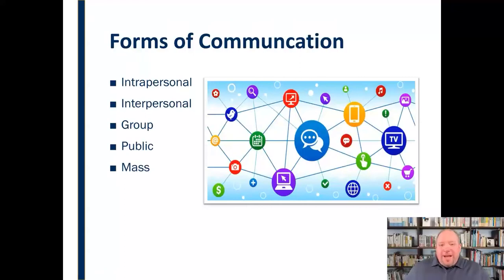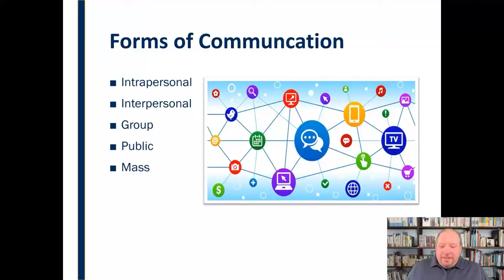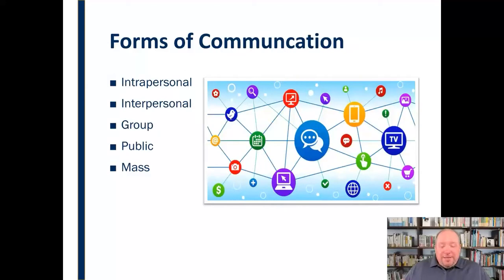Finally, we get to mass communication — communicating via television, radio, and even forms of the internet. Anytime we're trying to reach a mass audience, as big an audience as possible, that's mass communication. It follows the same general elements of the communication process as the other areas, but there are some key differences: there's always some sort of technology as an intermediary, and feedback is always delayed in mass communication, whereas in other forms it's simultaneous. So there are different rules that apply.